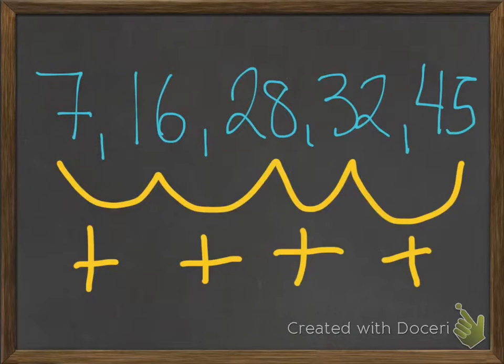To begin with, we're going to start with the mean. The mean is the average. First, you add up all the numbers in the data. 7 plus 16 plus 28 plus 32 plus 45 equals 128.